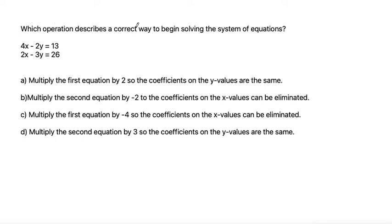Which operation describes a correct way to begin solving the system of equations? We're given two equations: 4x minus 2y is equal to 13, and 2x minus 3y is equal to 26.